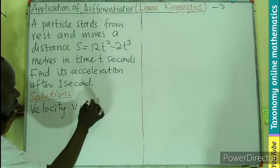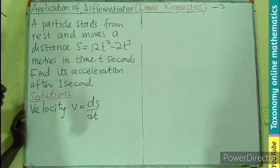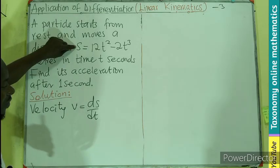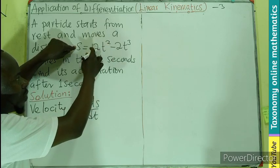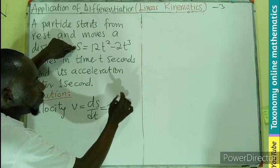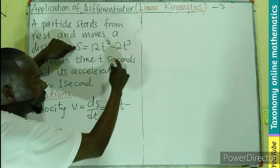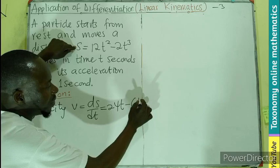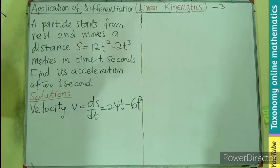V equals ds over dt, the differentiation of the distance with respect to time. So when 2 comes forward to multiply the 12, we have 24, reduce 1 for the power. Minus 3 comes forward, 6, then we have the power to be squared. So this is the velocity.